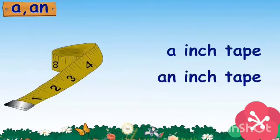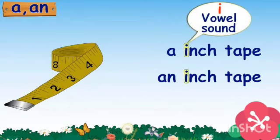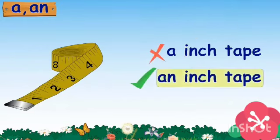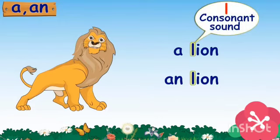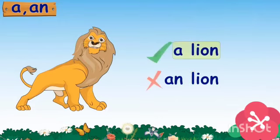Inch tape — it is a single object and begins with the vowel sound of the letter I, so we use AN inch tape. A line — line begins with the consonant sound, so we use A line.